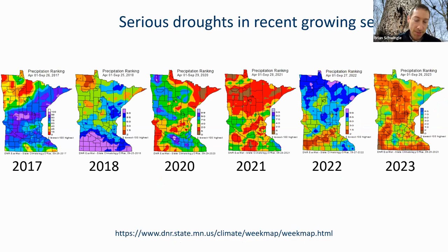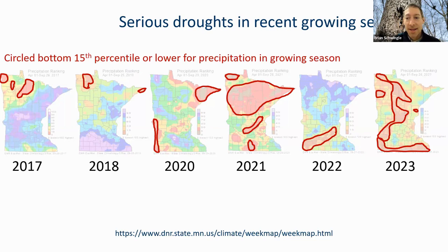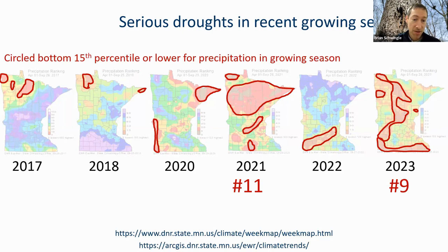More recently we've also had a lot of serious droughts. These maps from the DNR's climate team show the lowest 15% growing season precipitations. The areas in brown or maroon rank among the driest 19 years. You can see that 2021 and 2023 were statewide droughts covering extensive areas. In fact, 2021 was the 11th driest year on record, and 2023 was the 9th driest year on record for the entire state.